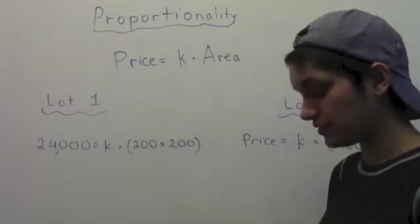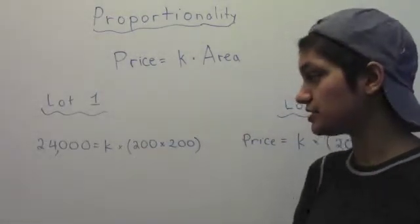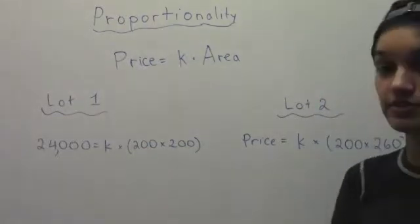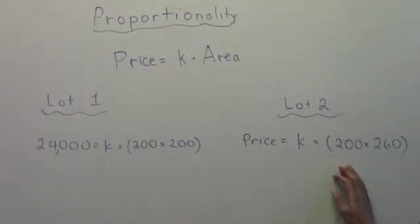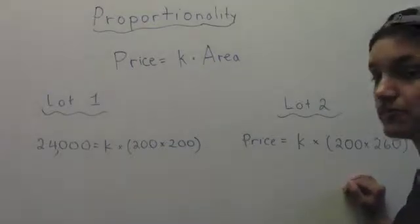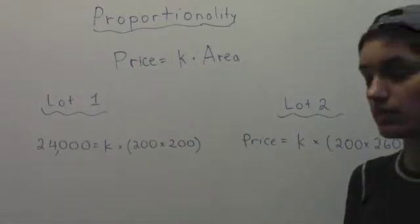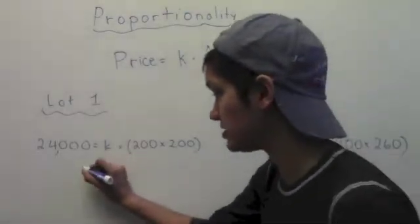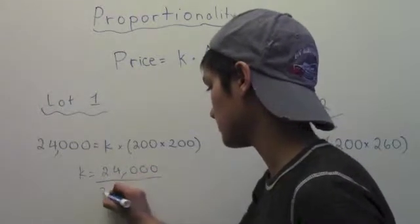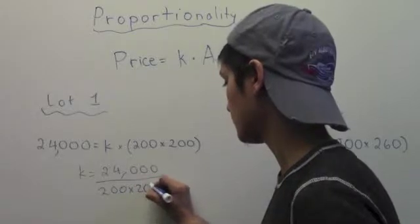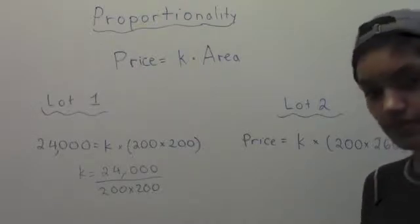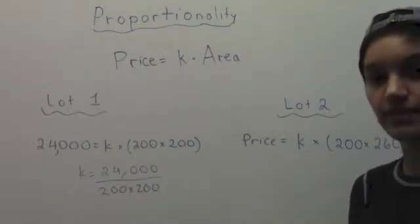We know that the cost of the first lot is $24,000, and its area is 200 by 200 feet. We can plug in these values to get this expression. We know that the dimensions of the second lot are 200 by 260 feet, and we are asked to find the price. But because these equations are from the same scenario, the k's in each of them are equal. So we can solve for the constant of proportionality on this side, and we can plug it into this equation to find the price of the second lot. That's it for today on proportionality. Thanks, Chris. Back to you.